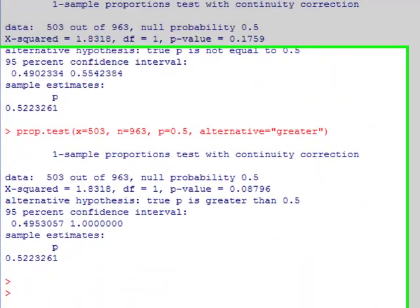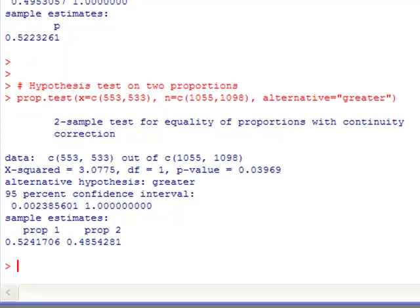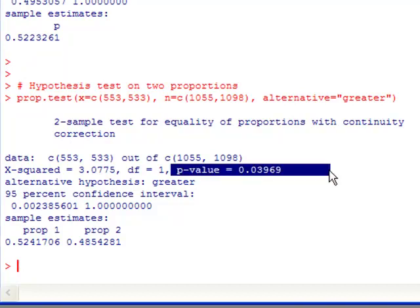So I run this. Alright, so you can see here, I get a p-value again. Here, my p-value is 0.039. Now, again, whether that's significant or not depends on the significance level that you chose prior to conducting your experiment. And below, it gives you the two sample proportions. And notice it gives you a 95% confidence interval on the difference, and only on the difference.